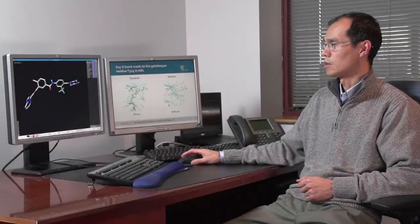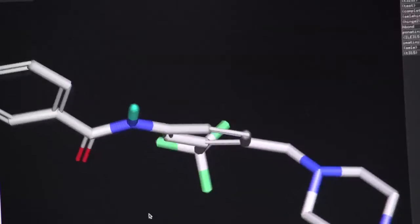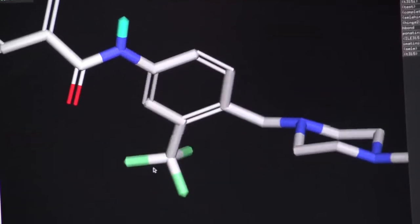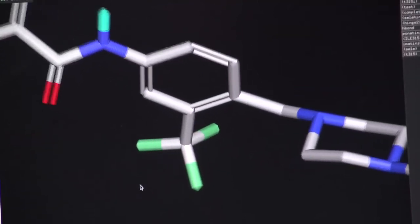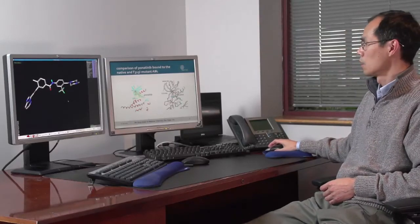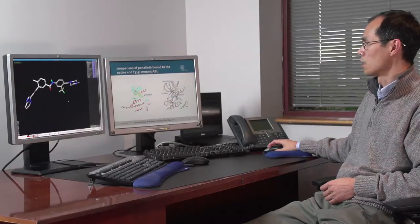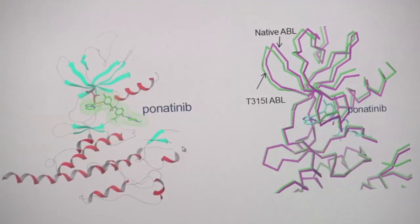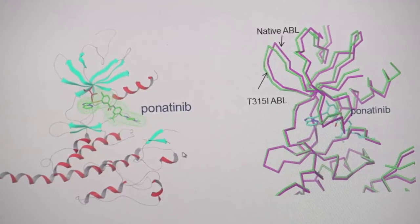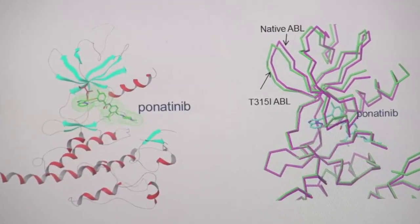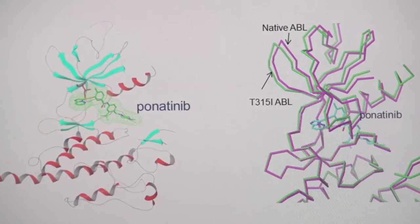We also designed perlatinib to be a DFG-out type of inhibitor. This whole component of the inhibitor not only gives binding potency but also gives you a different binding mode into the protein target. Once you have the DFG-out binding mode, this inhibitor is able to bind across from the upper domain to the lower domain of ABL kinase. This gives the protein some wiggle room so that it can adapt to the bound inhibitor even though it has different mutated residues in the protein.